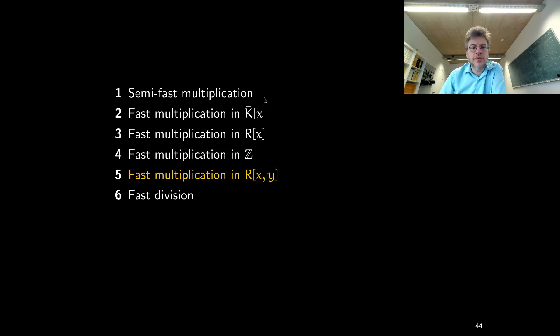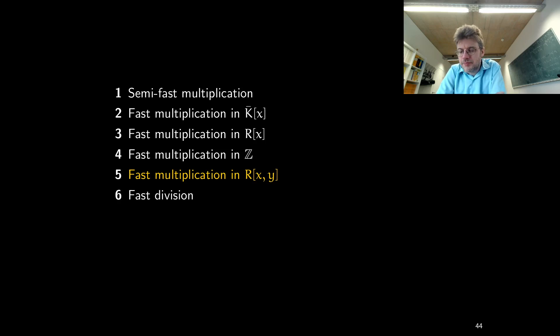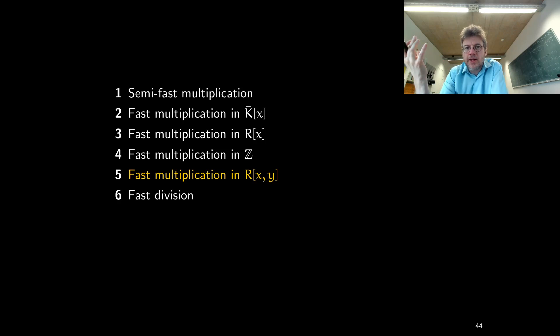In the first lecture, we talked about Karatsuba's algorithm and its generalizations. The idea of Karatsuba leads to algorithms that are faster than quadratic time. Quadratic time is the complexity of the standard multiplication algorithm if you multiply polynomials in the way how polynomial multiplication is defined. Karatsuba's algorithm is better — it's still polynomial time, with a complexity of n to the alpha for a certain alpha. Using this idea, you can make alpha as close to 1 as you wish, so you can get as close to linear time as you wish.